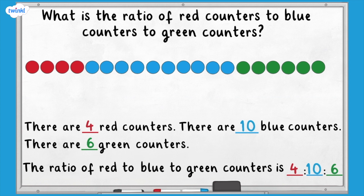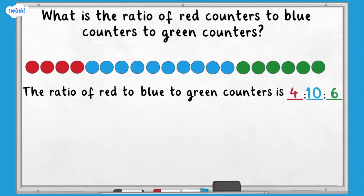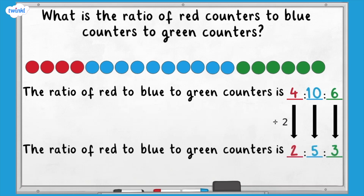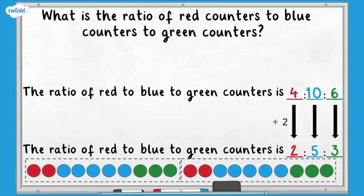We can simplify this ratio in the same way as we would simplify a fraction. The numbers four, ten, and six are all even numbers, which means they all have two as a factor. We can divide them all by two and still have a whole number, leaving us with the ratio two to five to three. If we regroup our counters, we can check that this is true.